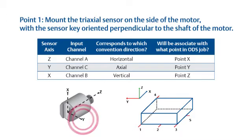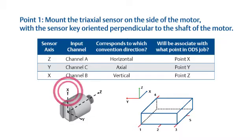Your Y axis in the sensor will be your input C and corresponds to the conventional axial direction, which will associate it with point Y. Finally, the X axis of the sensor is your channel B and corresponds with a conventional vertical direction. It is associated with point Z in the ODS.